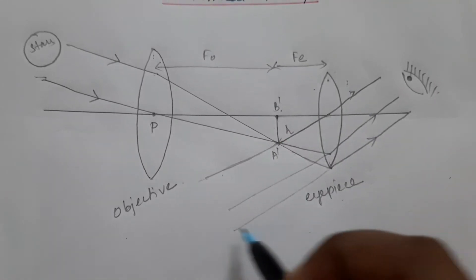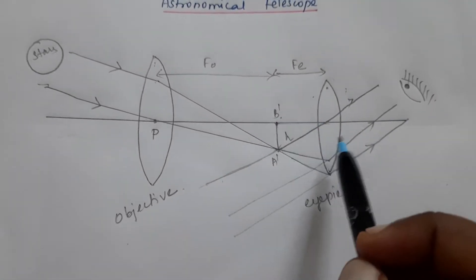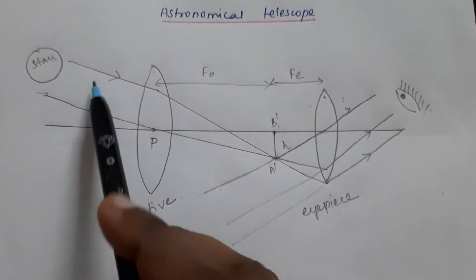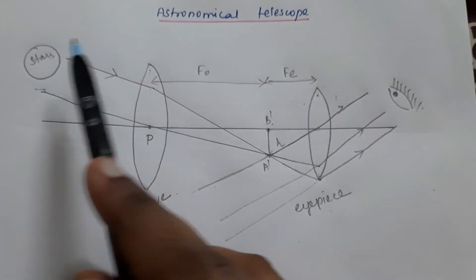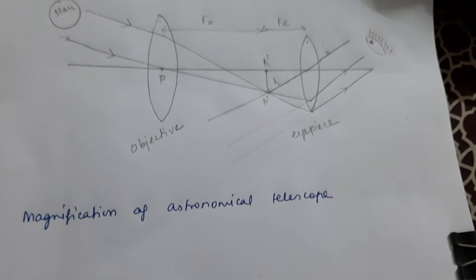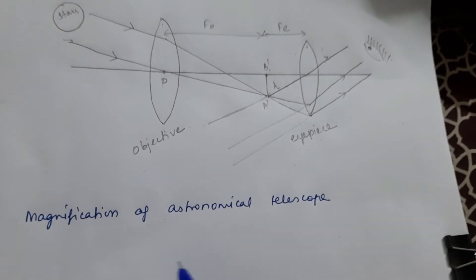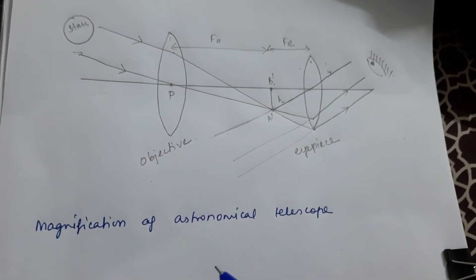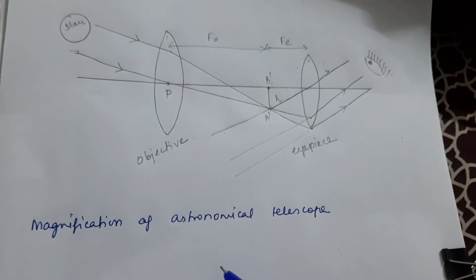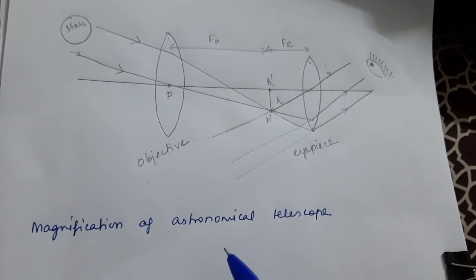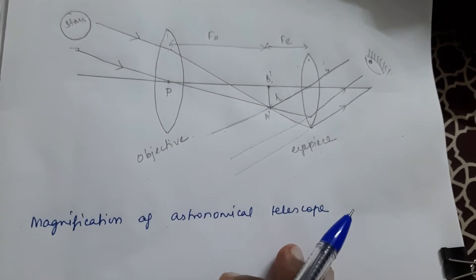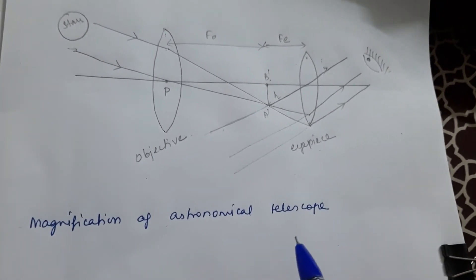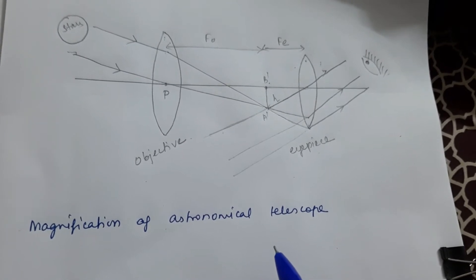This is how we obtain the image in the telescope. Now we are going to find out the magnification of the astronomical telescope. The ordinary method of finding lateral magnification is not possible here, so we use angular magnification.